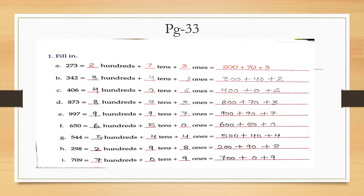Now children, let's do some questions from page 33 of your maths book. Question 1: fill in the blanks. Look at the first part — the number is 273. You have to fill the blanks with the help of place value.